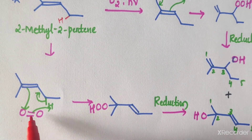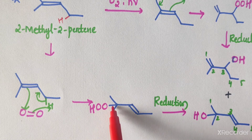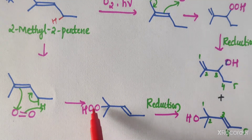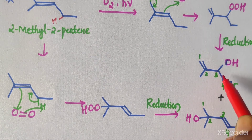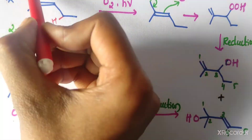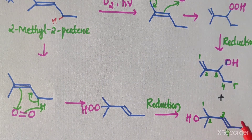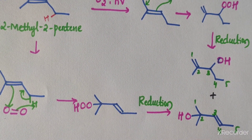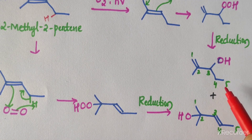By abstracting one proton, the bond shifts toward those two carbon atoms and the pi electrons attack the oxygen atom, giving a peroxide (OOH) group at the second position. On reduction, an alcohol is obtained. If the other proton is abstracted, the OOH group ends up at the third position. These two products — methyl pentanols — are obtained as a 1:1 ratio mixture.